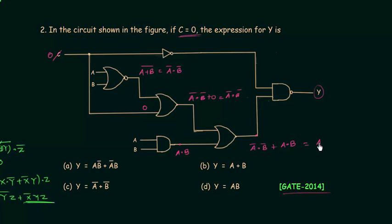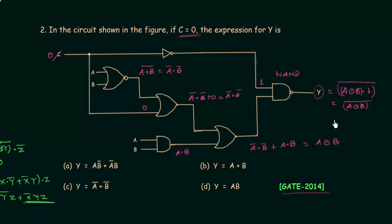The output of the next OR gate is (a' AND b') OR (a AND b), which equals a XNOR b. Finally, the NAND gate has first input 1 (since c=0 passes through an inverter) and second input a XNOR b. The output y = (1 AND (a XNOR b))' = (a XNOR b)'. Since XOR is the complement of XNOR, y = a XOR b = ab' OR a'b. Option A is correct.